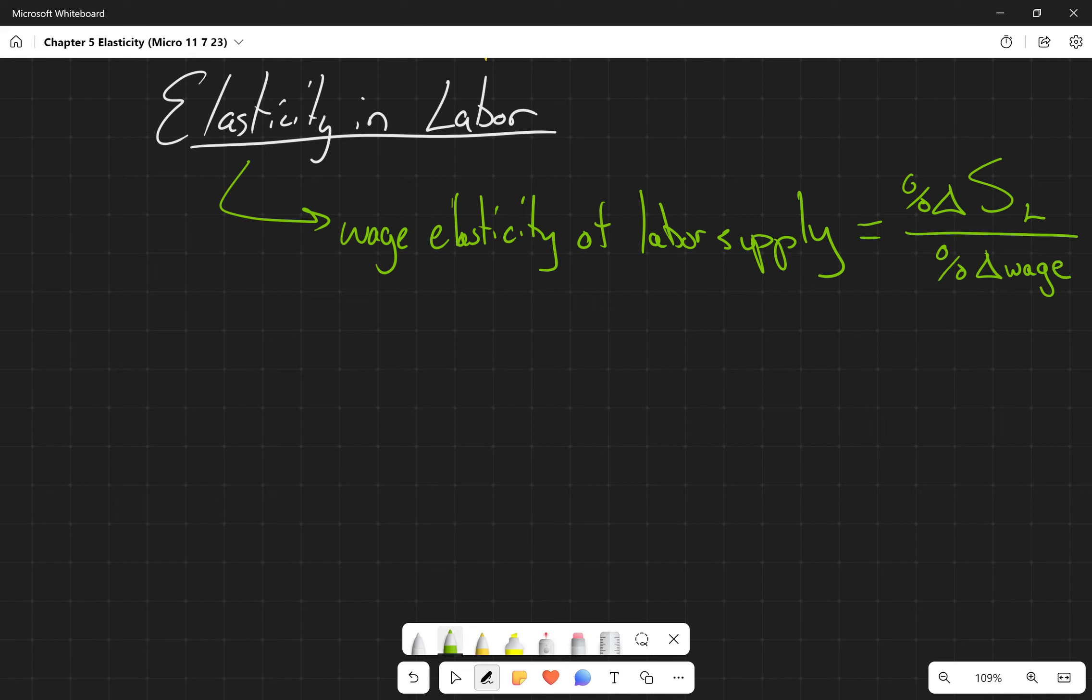And so this is the situation where, let's say that the equilibrium wage has fallen significantly, a bunch of people might decide to not work in the workforce as a result. They might go to college, they might just drop out of the labor force and live off government benefits or their savings or whatever the case may be.